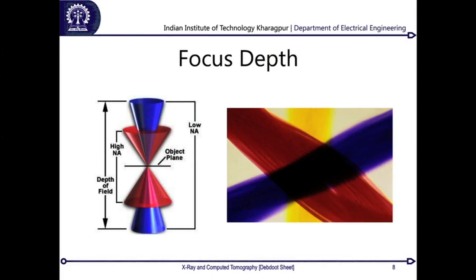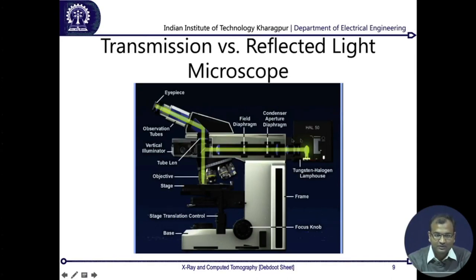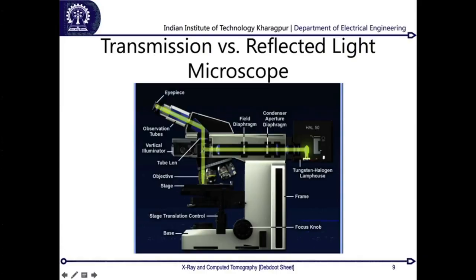Another microscope variant is the reflected light microscope. In a transmission microscope, light from the light box passes up through the sample to the objective. In a reflected light microscope, the light box illuminates through the objective itself — useful for opaque objects where transmitted light cannot pass. A beam splitter inside the microscope separates the illumination path from the imaging path, so the same objective is used for both illumination and collecting the reflected light, without blinding the viewer.